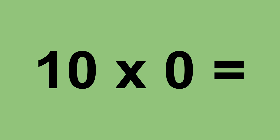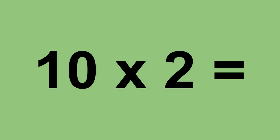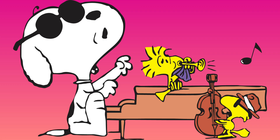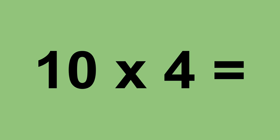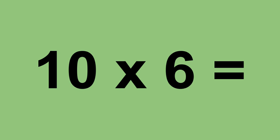10 times 0 equals 0. 10 times 1 equals 10. 10 times 2 equals 20. 10 times 3 equals 30. 10 times 4 equals 40. 10 times 5 equals 50. 10 times 6 equals 60.